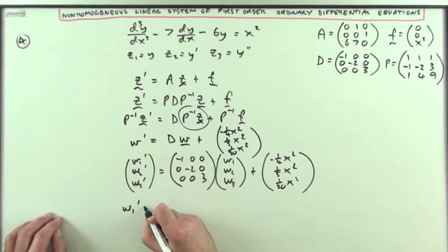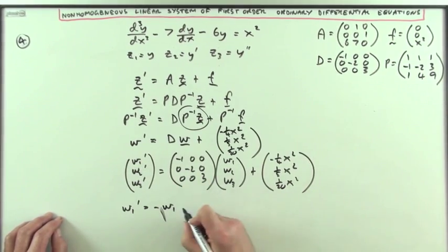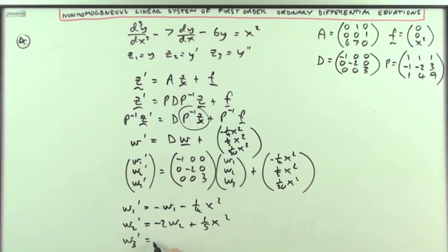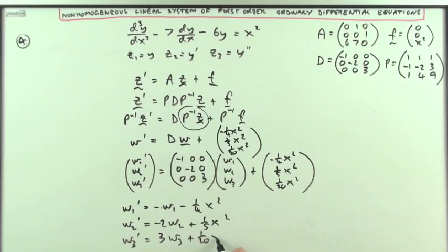Namely, w1 dashed is negative 1, or just negative w1, minus 1/4 x squared. To be solved, w2 dashed is negative 2 w2, notice of course those are just eigenvalues, plus 1/5th of x squared. And w3 dashed is 3 w3 plus 1/20th of x squared. This is now the system of linear equations, which can be solved separately.